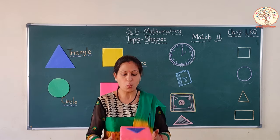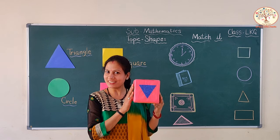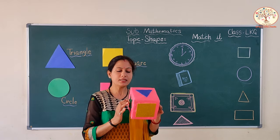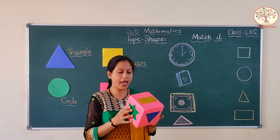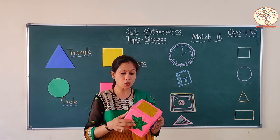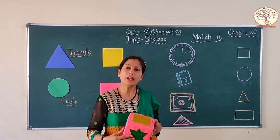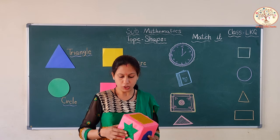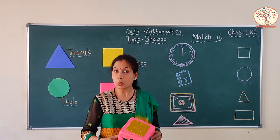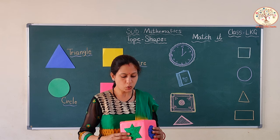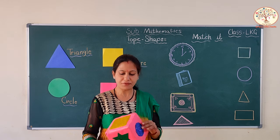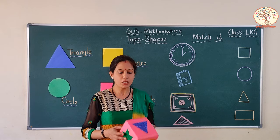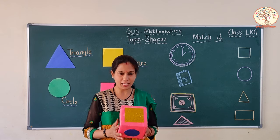Look, what I have in my hand? This is a dice, and this dice has different shapes on it. Generally, dice has numbers on it. Have you played Ludo? This is a different dice — it has shapes on it. So, let's play a game.